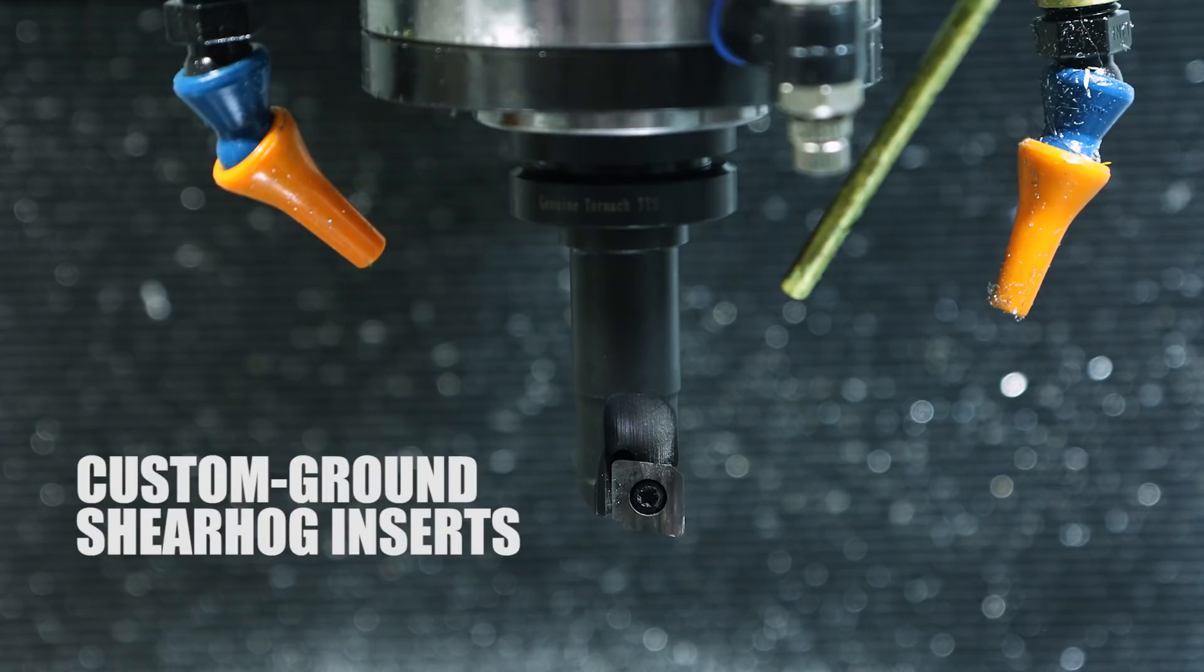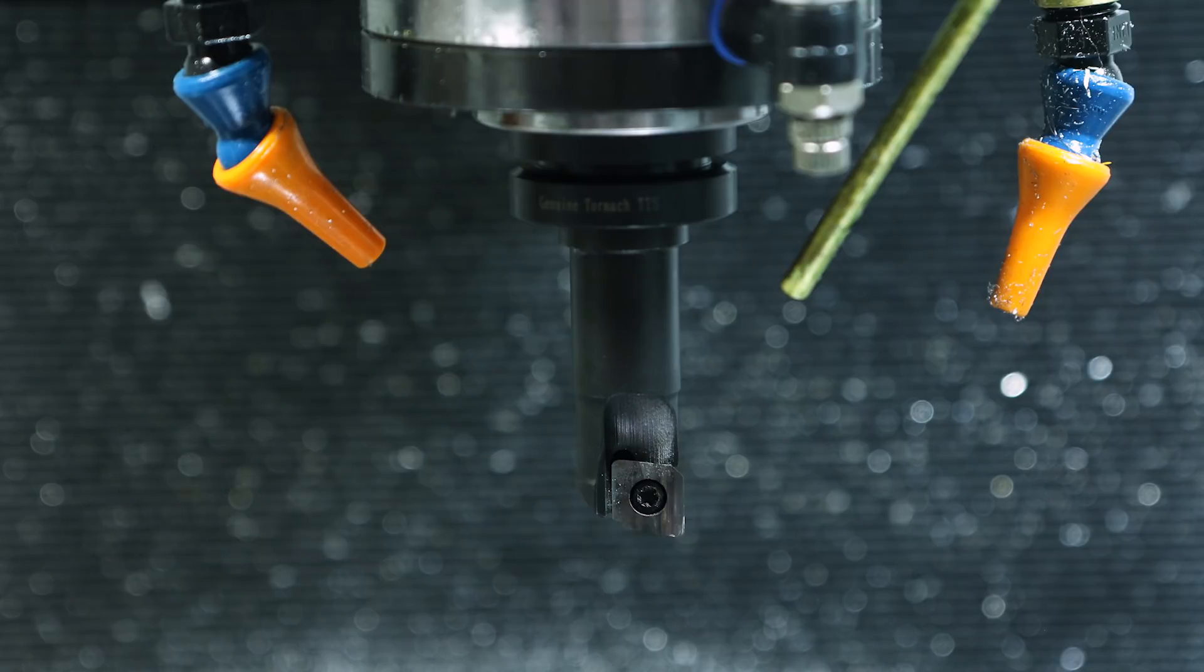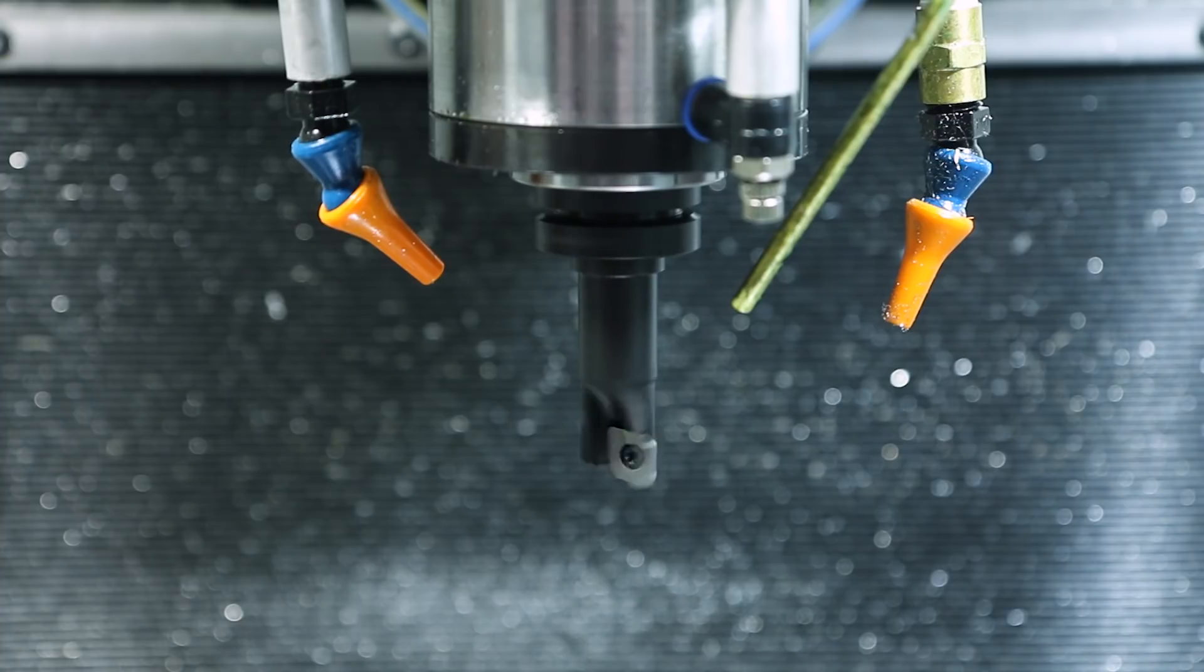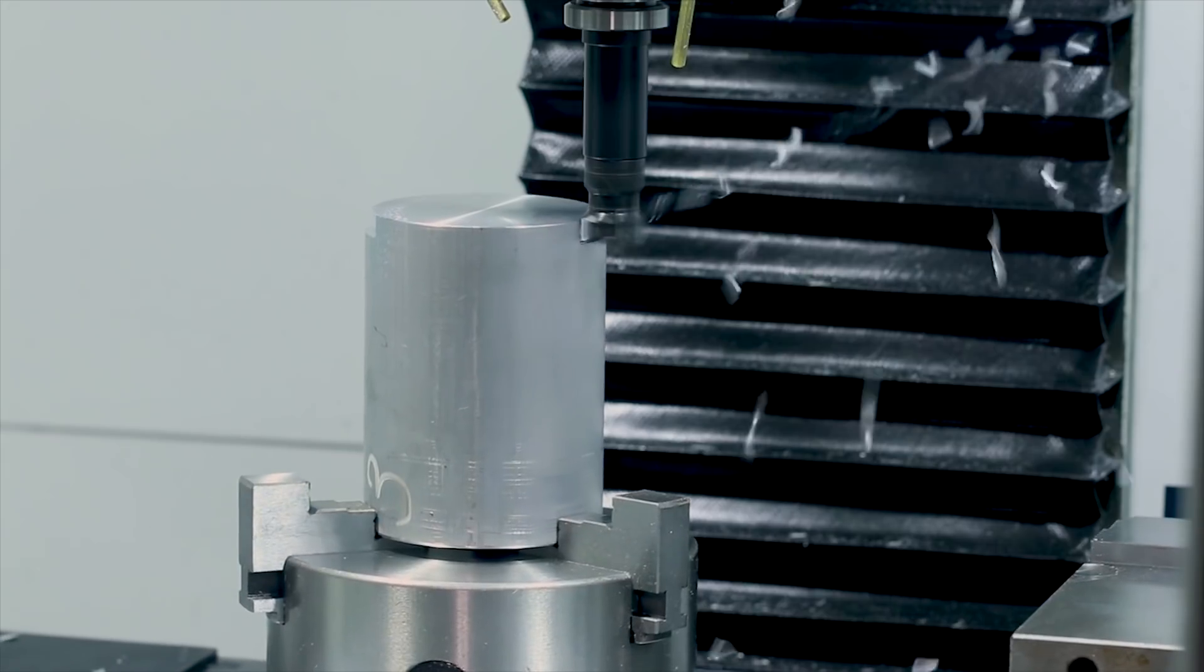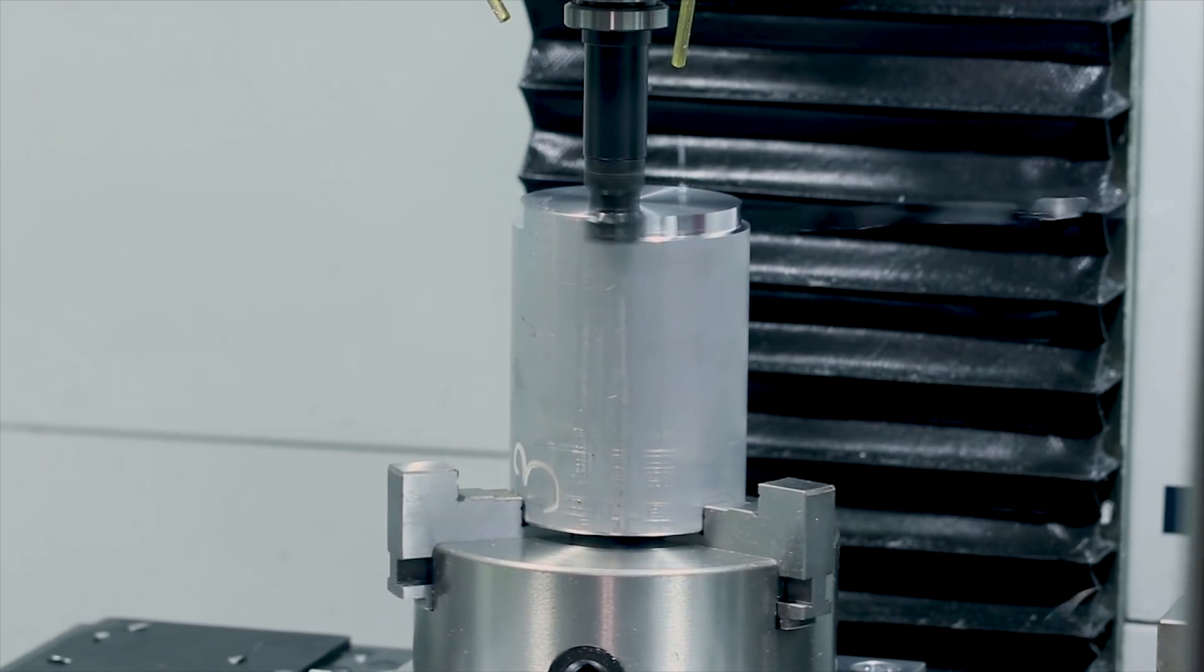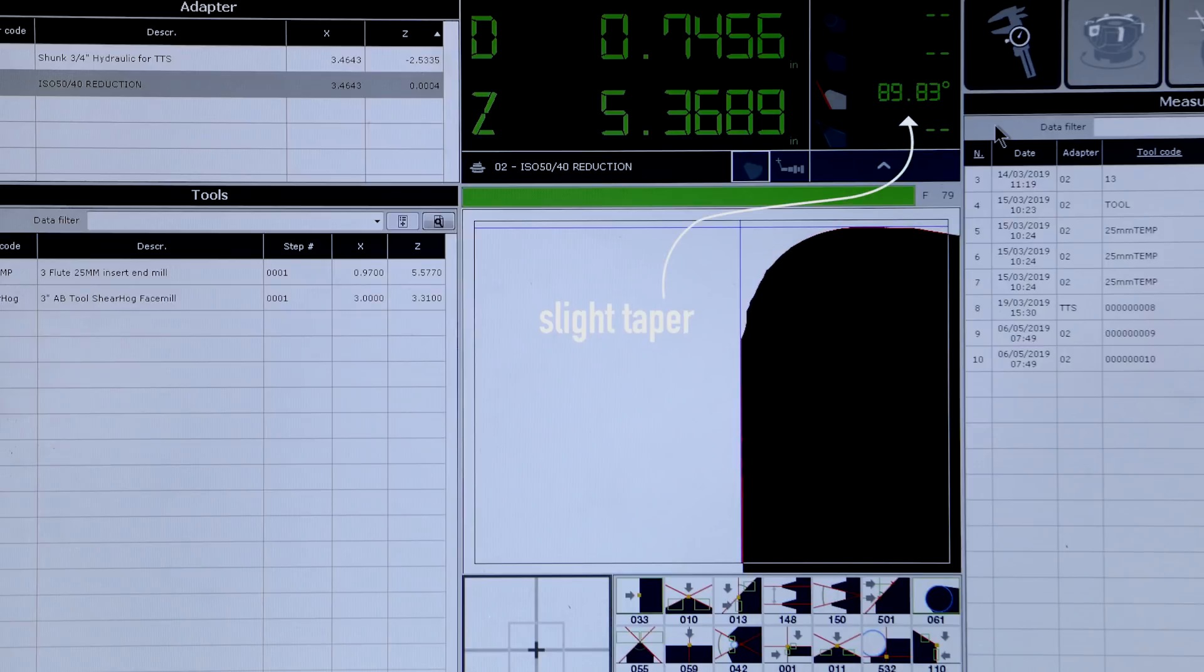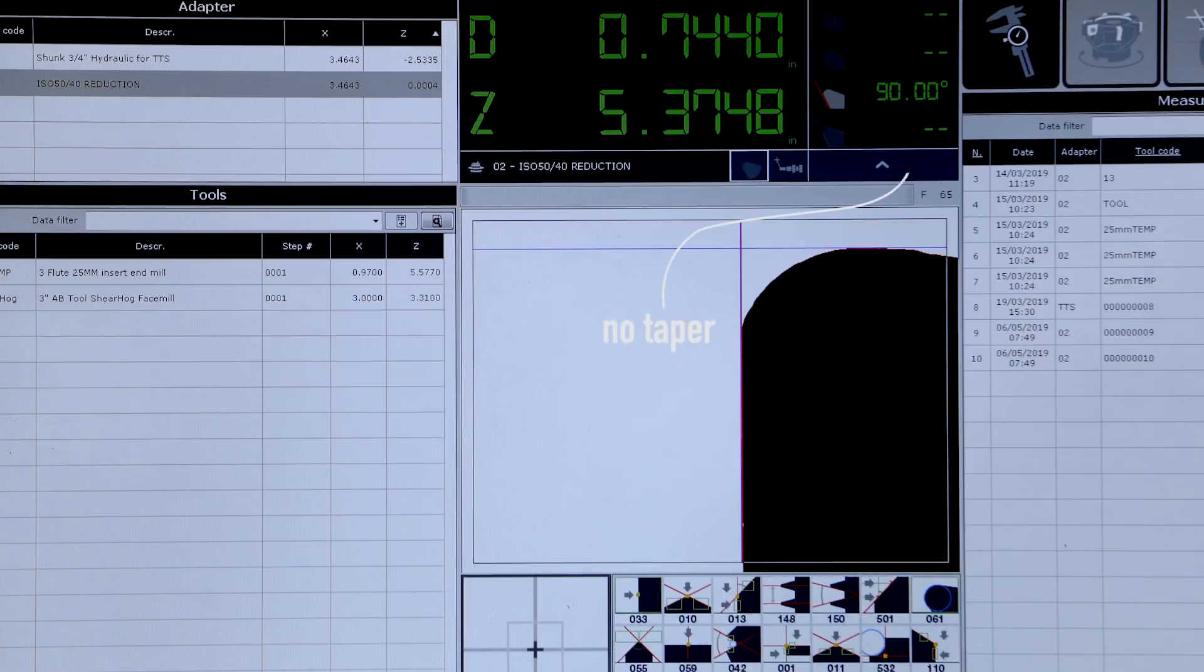First up, custom ground shear hog inserts from our friends at AB Tools. Back when I was doing the Pocket NC Tombstone, I thought it would be great if I could finish with a shear hog. Surface finish is fine, it just has that taper on it, so I wasn't able to do that. But they hooked us up with some custom straight ground inserts.